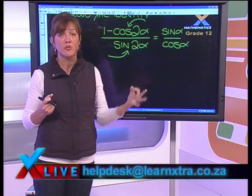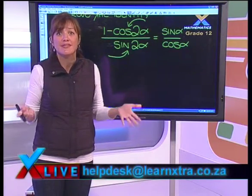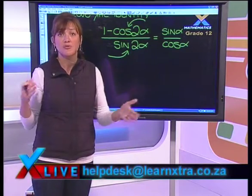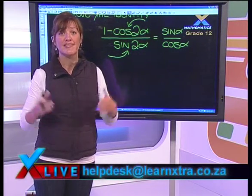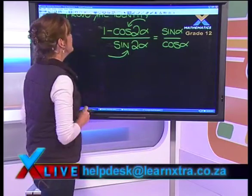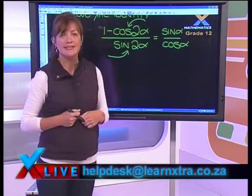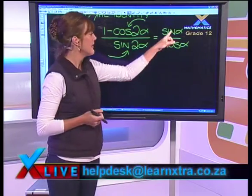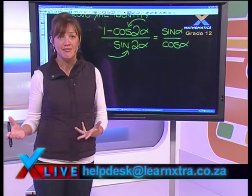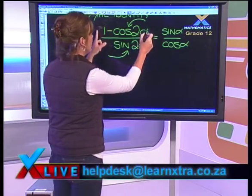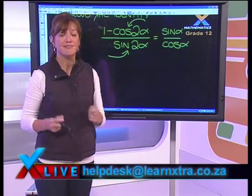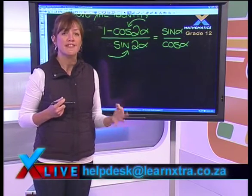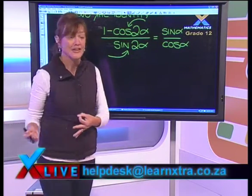We need to decide which identity is going to be the best to use. It's not wrong whichever one you choose — it just depends on which one gets you to the answer with the least hassle. Look at the numerator on the left-hand side: 1 minus cos2α, and the right-hand side numerator is just sinα. We're trying to convert to just sinα, which suggests we use the cos double angle identity that only contains sine.